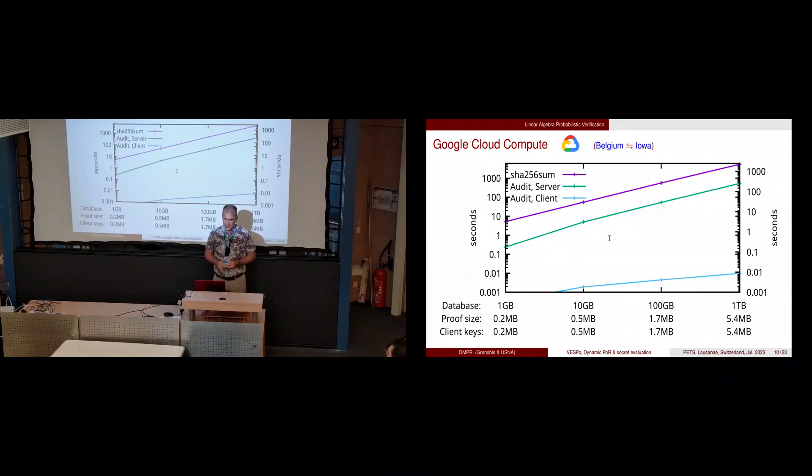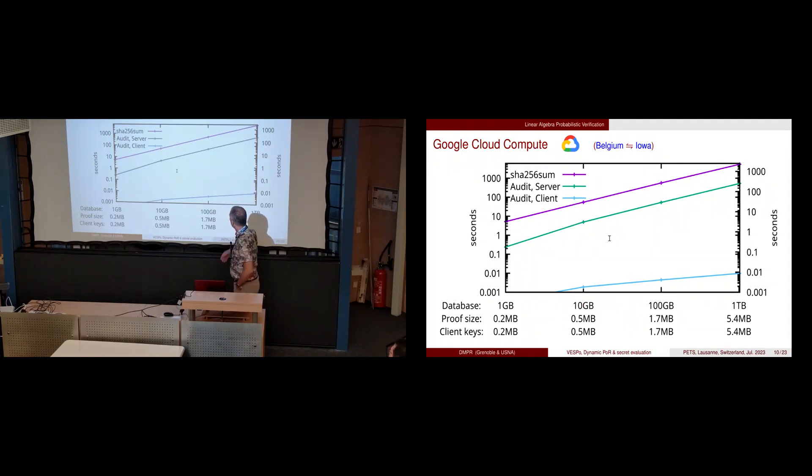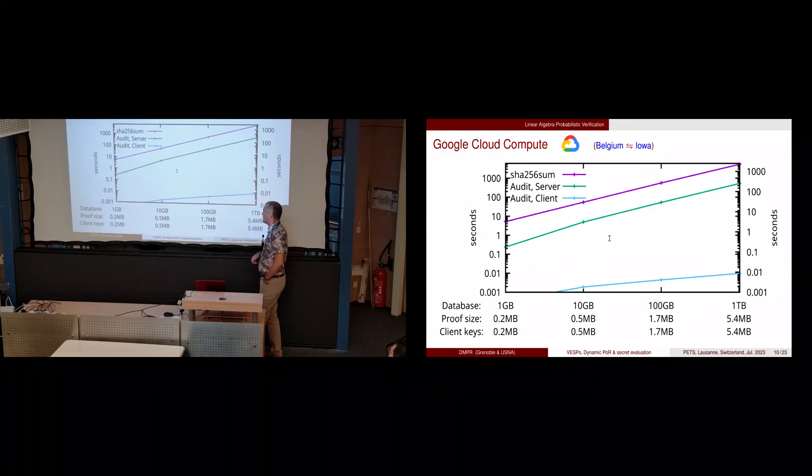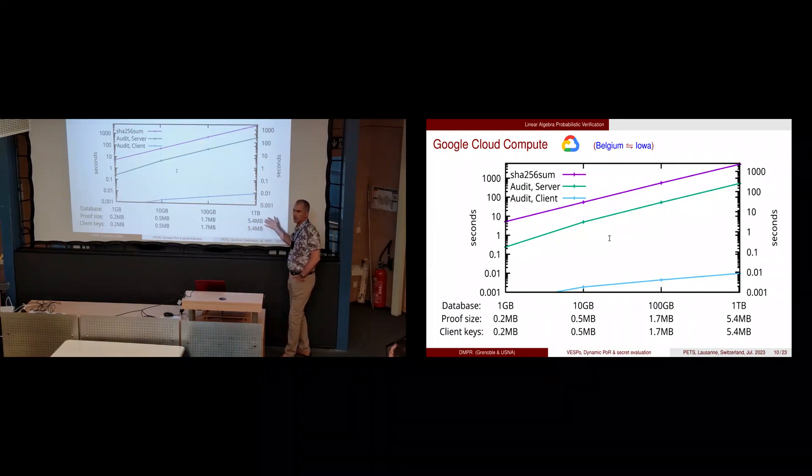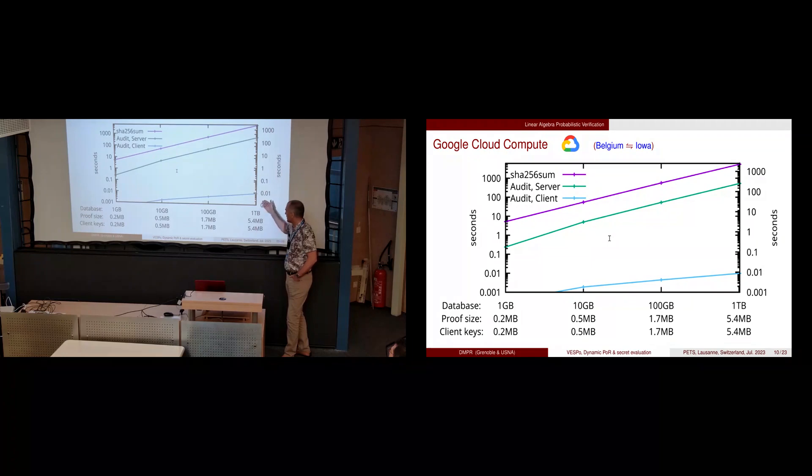Here are some transatlantic experiments. In violet you have SHA-256 sum on the data which goes up to a terabyte. Our matrix vector multiplication is in green—it's quite fast already, and the client time is pretty nice. The catch is the proof size and the client keys which are square root of n, so this comes quite large. For a terabyte of data, this is a megabyte of keys and size of communications. We want to reduce those numbers in this paper.